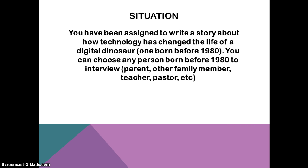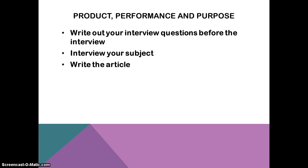The situation is you've been assigned to write a story about how technology has changed the life of a digital dinosaur — someone born before 1980. You can choose any person born before 1980 to interview: a parent, a teacher, a family member, a pastor — anyone you know, because they'll all probably have similar stories about adapting to technology. You'll write out your interview questions beforehand so you'll be prepared, and if you get stuck during the interview, you can refer to your questions to keep on track.